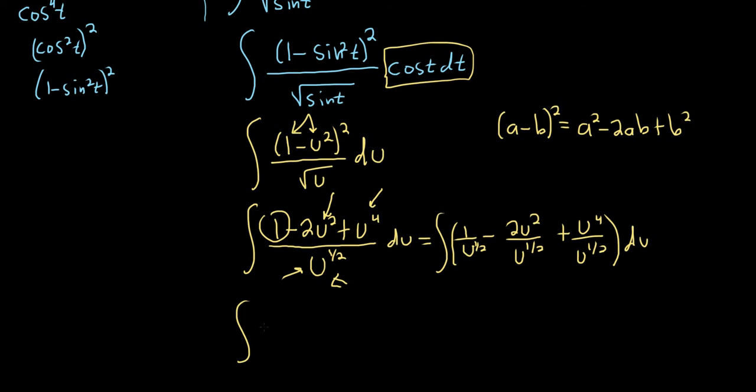So this one we can bring up, so it'll become u to the negative 1 half. Minus 2, we have u squared over u to the 1 half, so think of u squared as u to the 4 halves. So we have u to the 4 halves over u to the 1 half. So what you do now is you subtract the exponents. 4 halves minus 1 half is 3 halves.